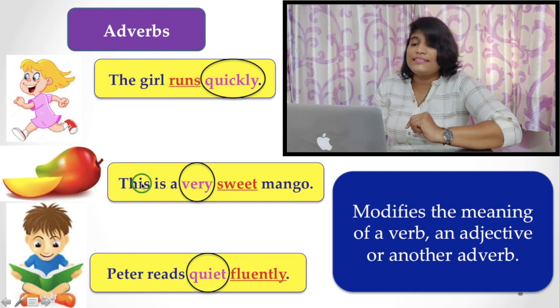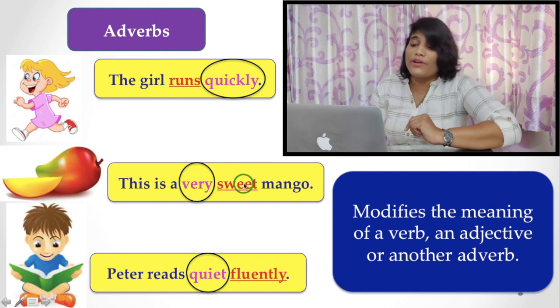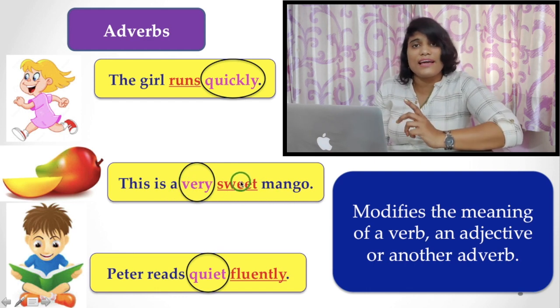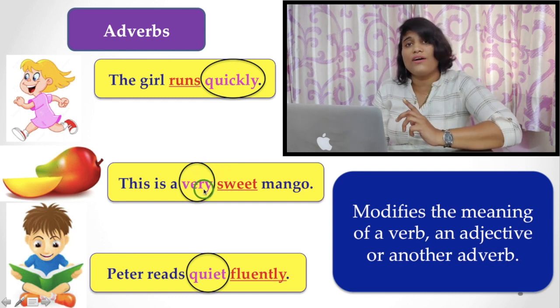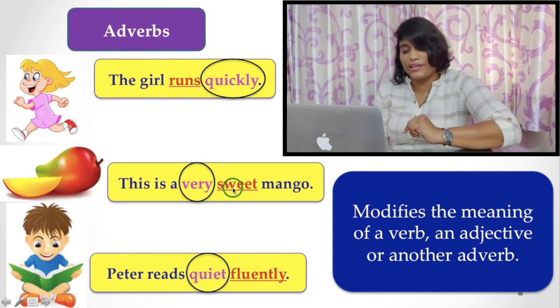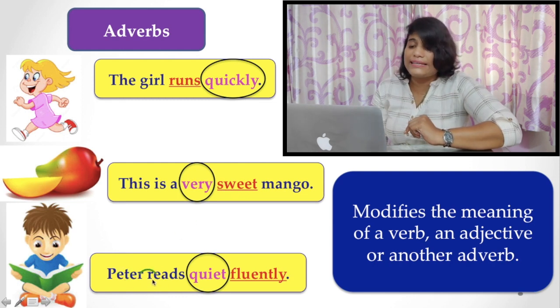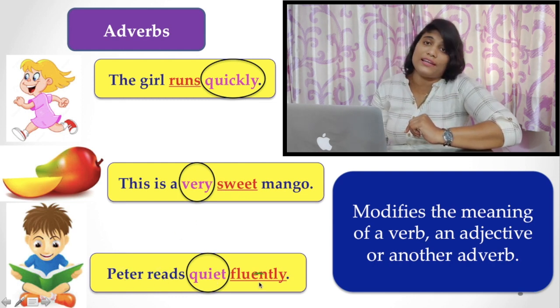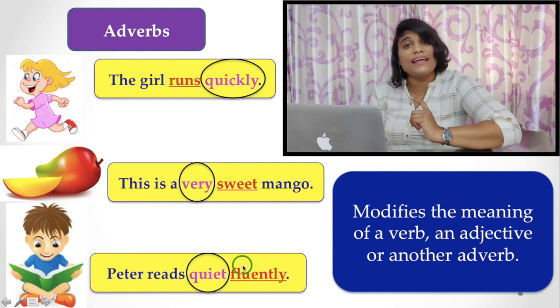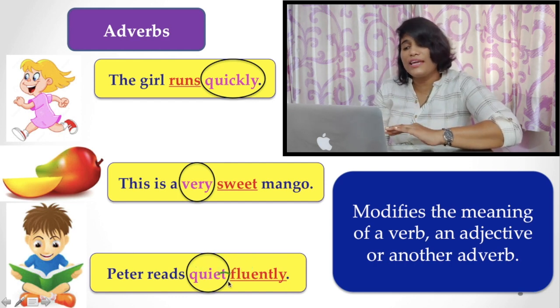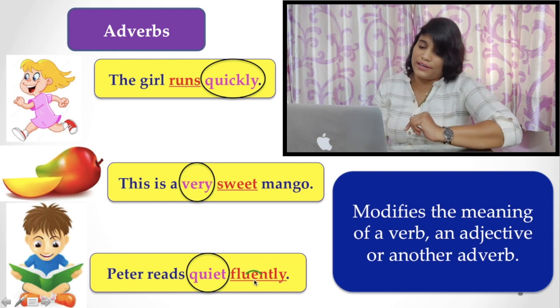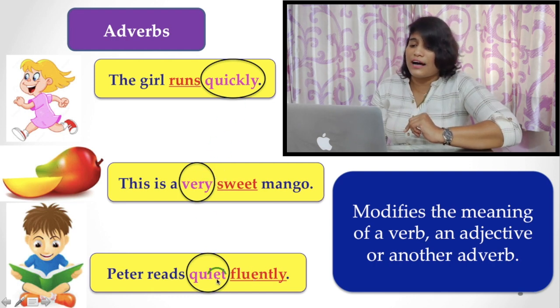Here, this is a very sweet mango. Sweet is an adjective, a describing word. And very here modifies the meaning of the adjective sweet. Similarly, Peter reads quite fluently. Here, fluently is an adverb, and quite also modifies the meaning of that adverb fluently. So all these words are called the adverb or modifier.